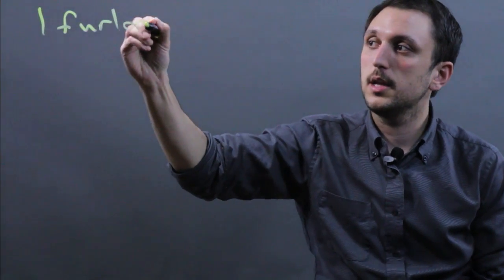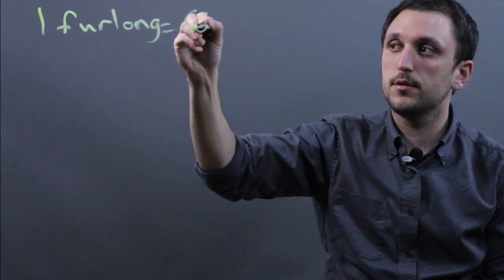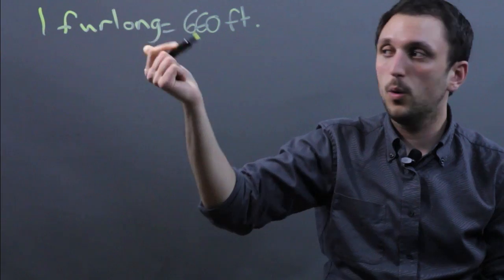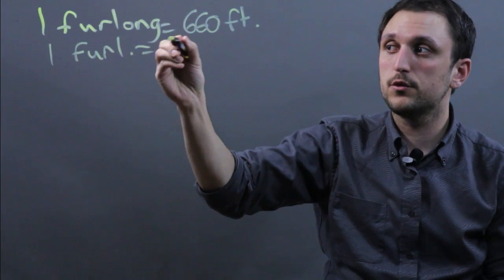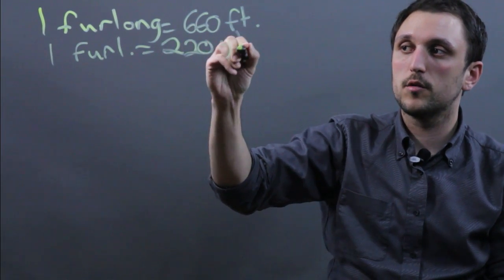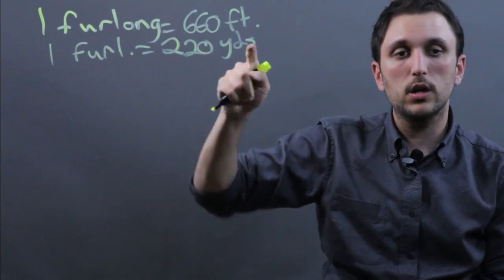Now one furlong equals 660 feet, or one furlong equals 220 yards because there are three feet in one yard.